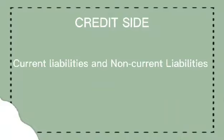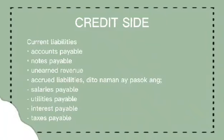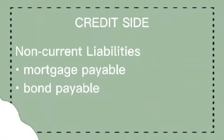Dumako naman tayo sa credit side. Sa liabilities tulad ng assets, meron din siyang current and non-current liabilities. Sa current liabilities, ay nakapaloob naman ang accounts payable, notes payable, unearned revenue, accrued liabilities — dito naman ay pasok ang salaries payable, utilities payable, interest payable, and taxes payable. Sa non-current liabilities naman, ay mortgage payable and bond payable.